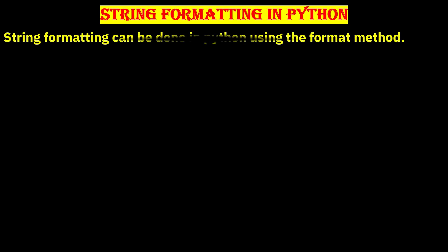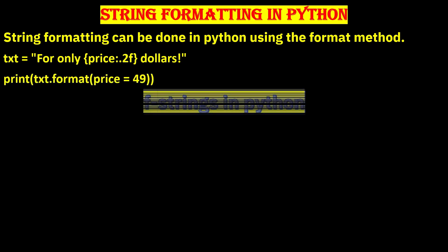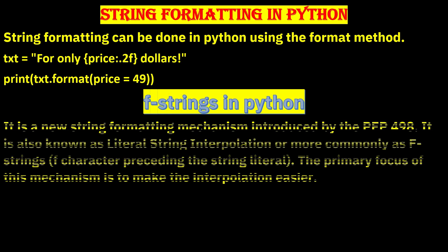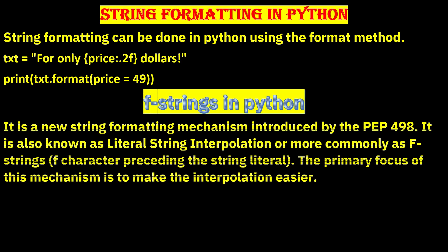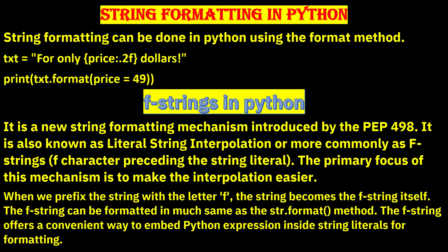String formatting in Python can be done using the format method. For example: txt is equal to 'For only {price:.2f} dollars', then print txt dot format with price equal to 19.49.